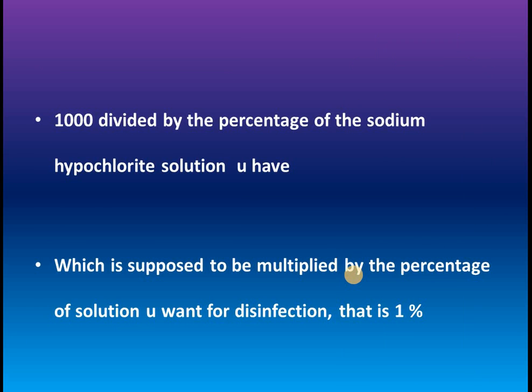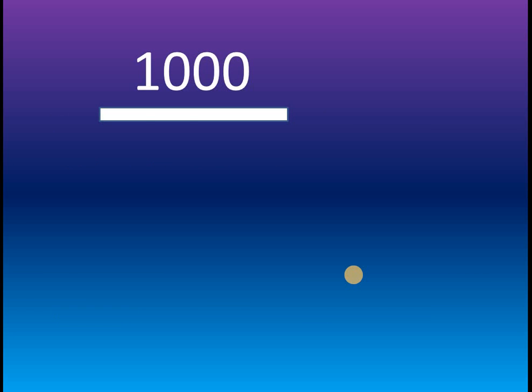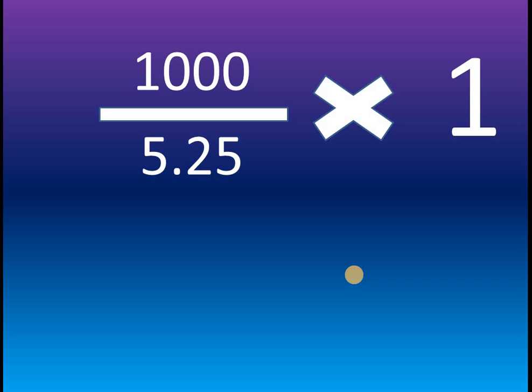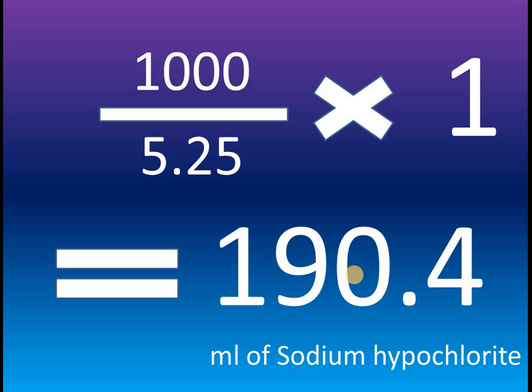When we want to prepare 1% of the solution using 1 liter (i.e., 1000 ml), it should be divided by the percentage of the sodium hypochlorite solution you have — that may be 5.25% or 3% — and multiplied by the percentage of the solution you want for disinfection, that is 1%. So, it is 1000 ÷ 5.25% × 1%, which comes to 190.4 ml — the amount of sodium hypochlorite solution needed to get a 1% solution for disinfection.